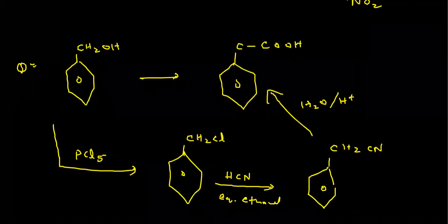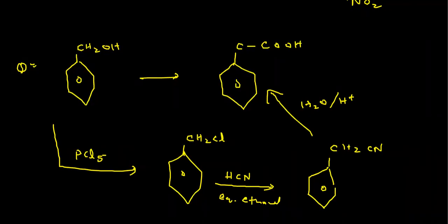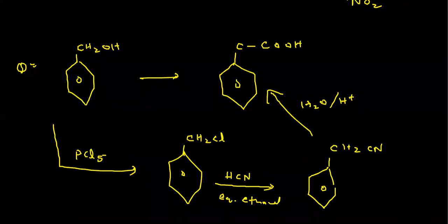So firstly we conduct a reaction from alcohol to haloalkane, then a reaction with KCN in the presence of aqueous ethanol so cyanide comes, and from the cyanide the carboxylic group preparation is quite easy. So we can conduct this reaction also.